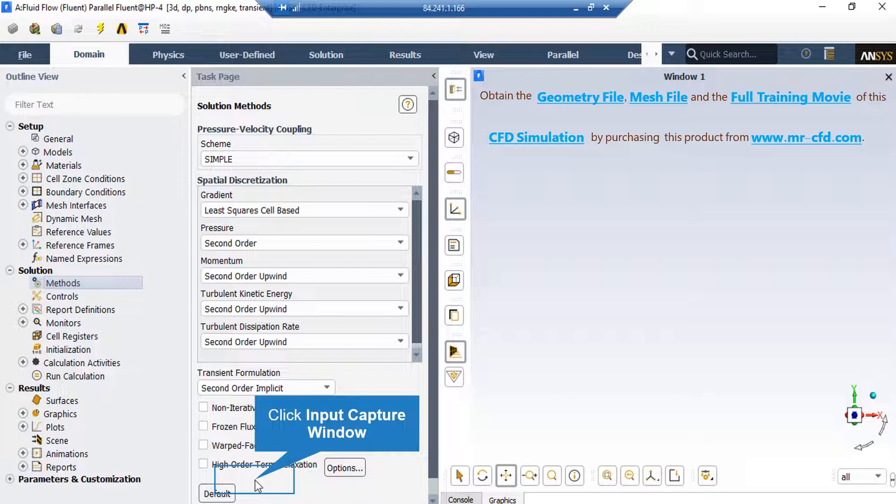You can change this discretization into other formats like first order upwind and the other options available for each variable under their combo list.